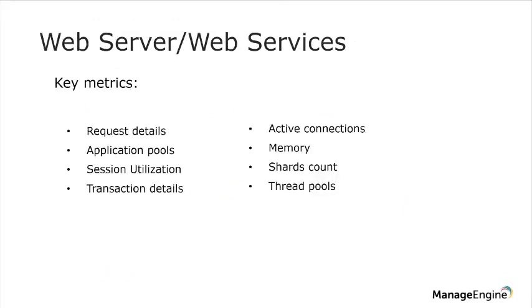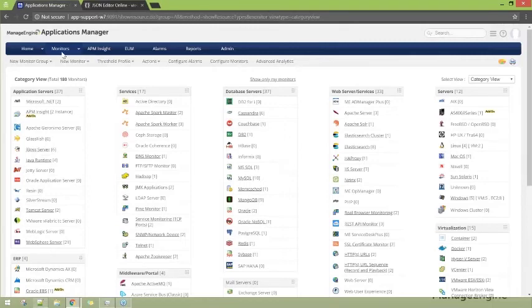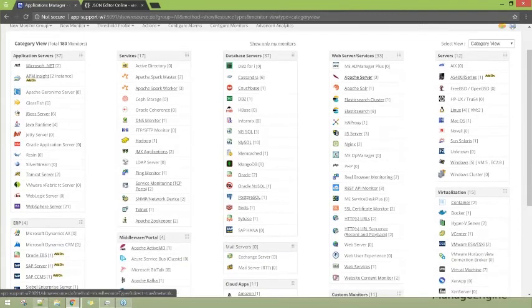When talking about web servers and services within Applications Manager, key metrics collected include request details, transaction details, thread pool, and session utilization details, collected periodically. These are the key metrics but not the only ones. Let's go to the product and explore all the types of metrics for these web servers and services. I'm going to take a sample web server and show you how it looks on the inside.